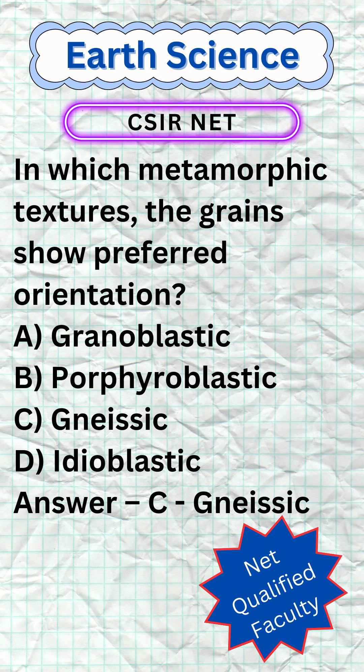Out of the choices, only Nasic exhibits preferred orientation of grains. Granoblastic grains are equidimensional without preferred orientation. Porphyroblastic refers to large crystals in a finer matrix with no preferred orientation. Nasic has a foliated texture with preferred orientation of platy minerals. Idioblastic refers to ideal crystal shapes, not preferred orientation. So the answer is C.